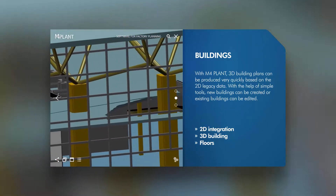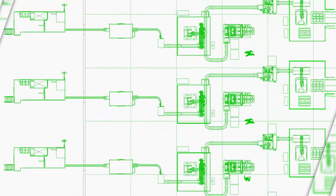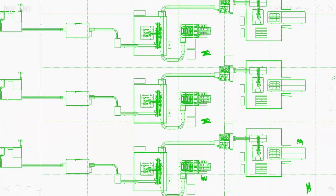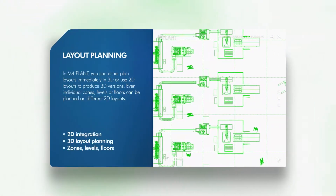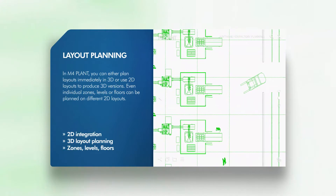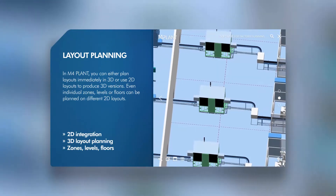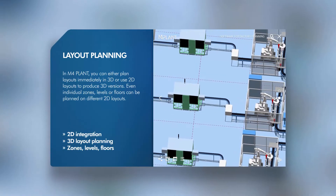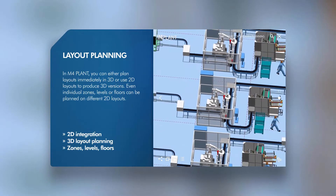In M4Plant, you can either create your design directly in 3D, or use 2D layouts to automatically create the 3D design for you. It is also possible to work on individual zones, levels, and floors on separate 2D layouts.